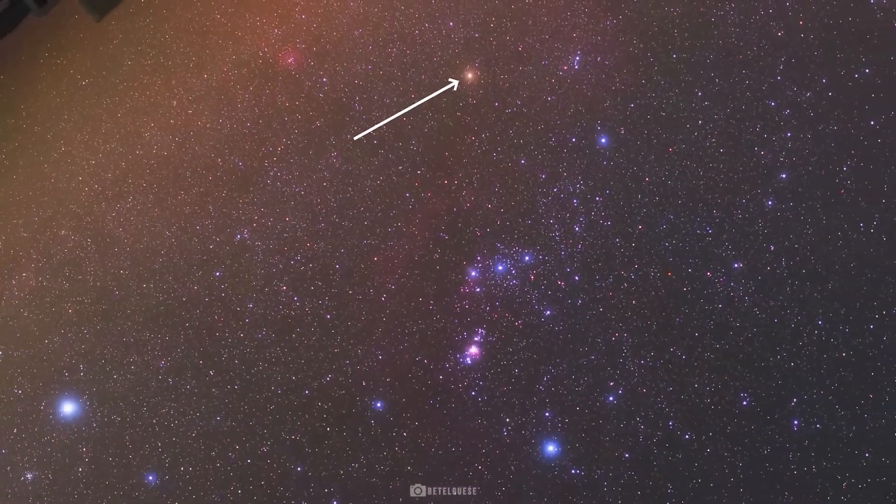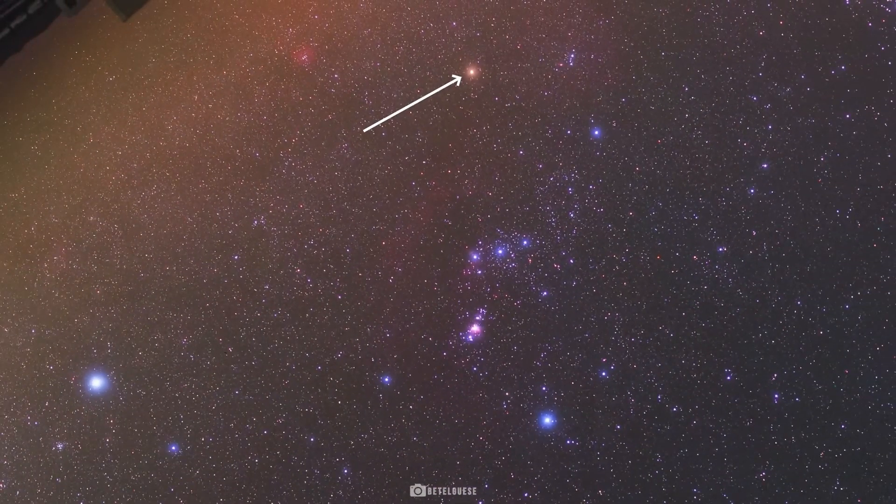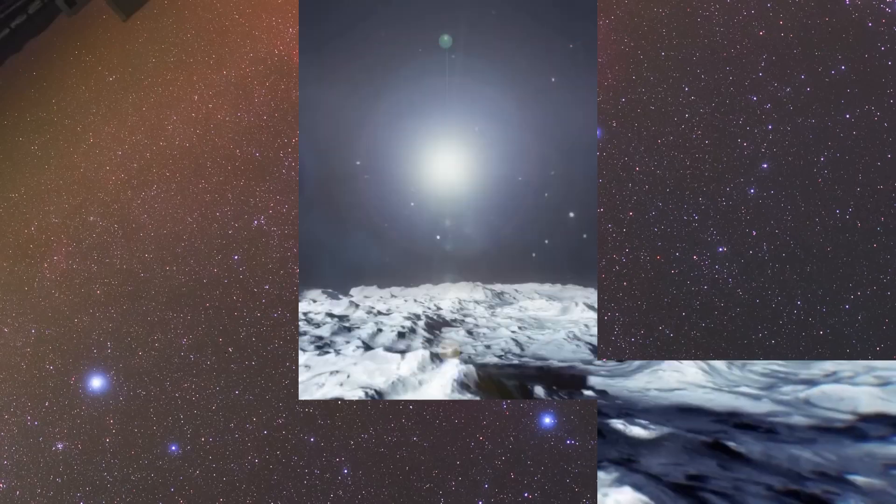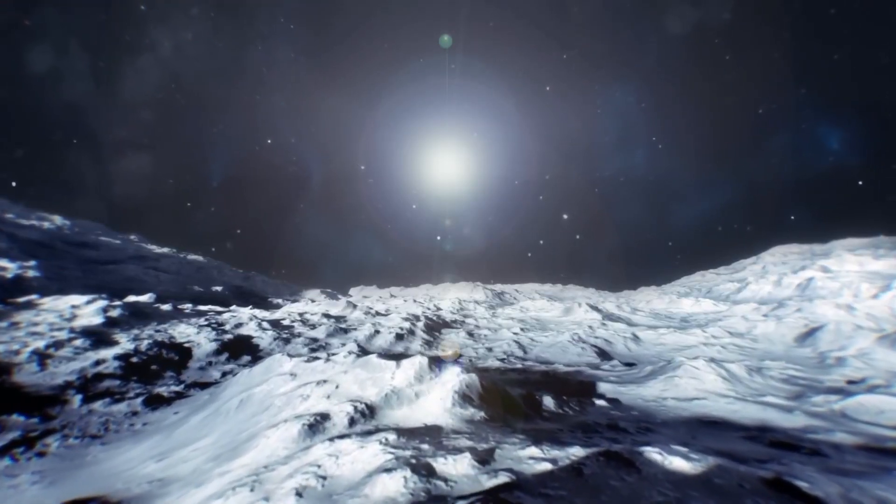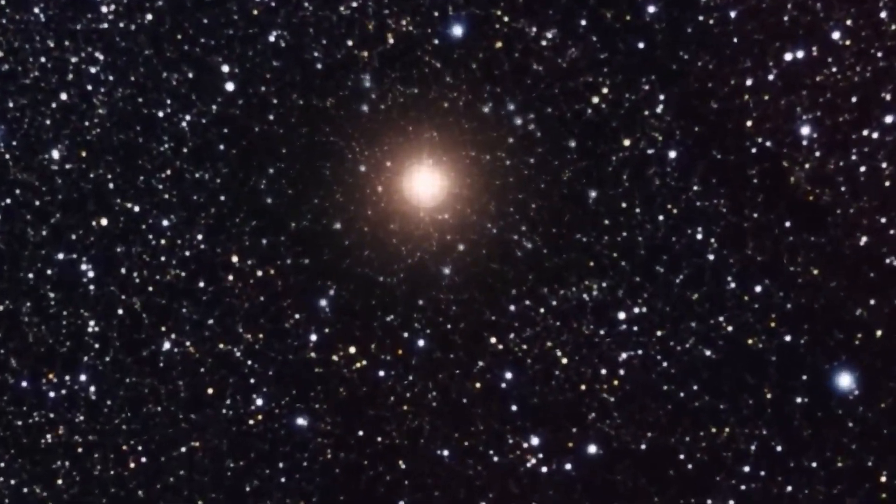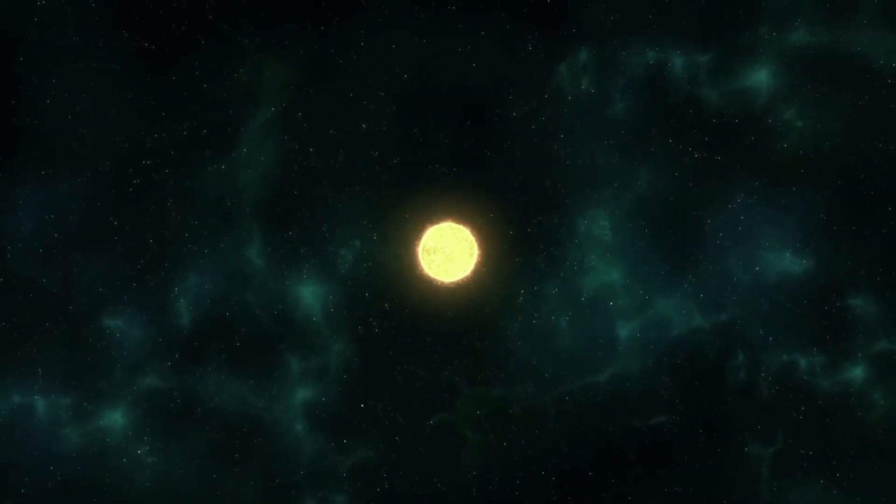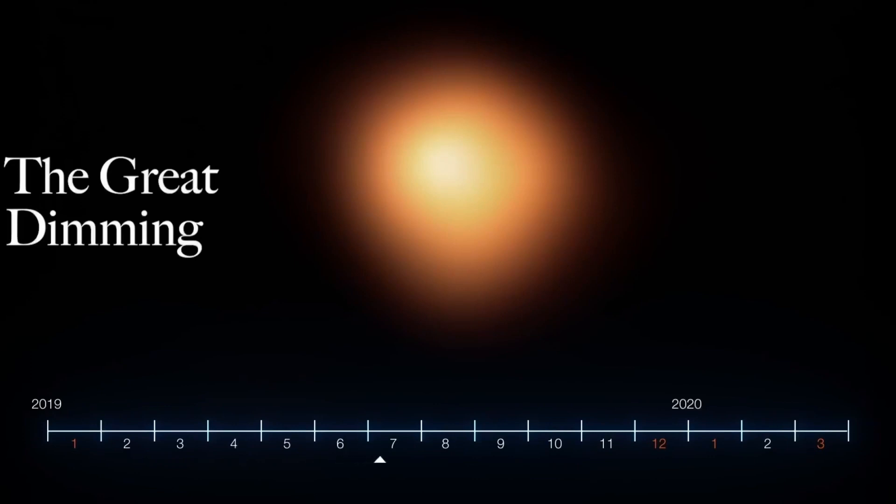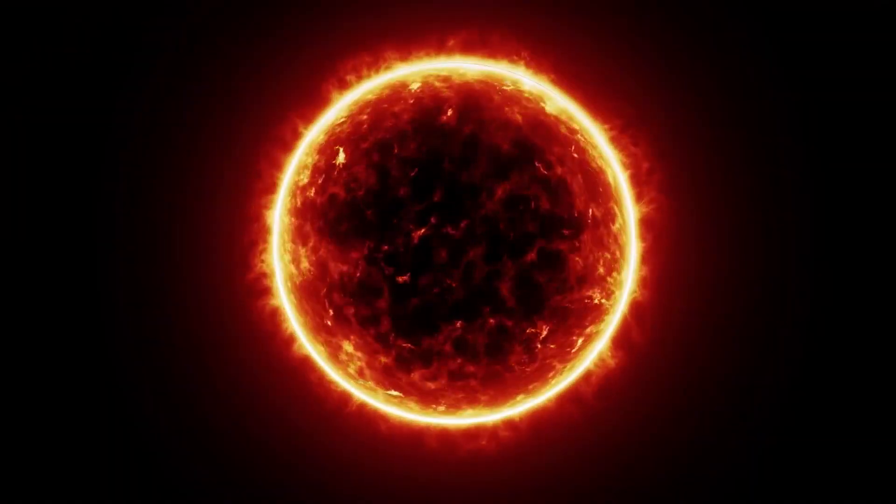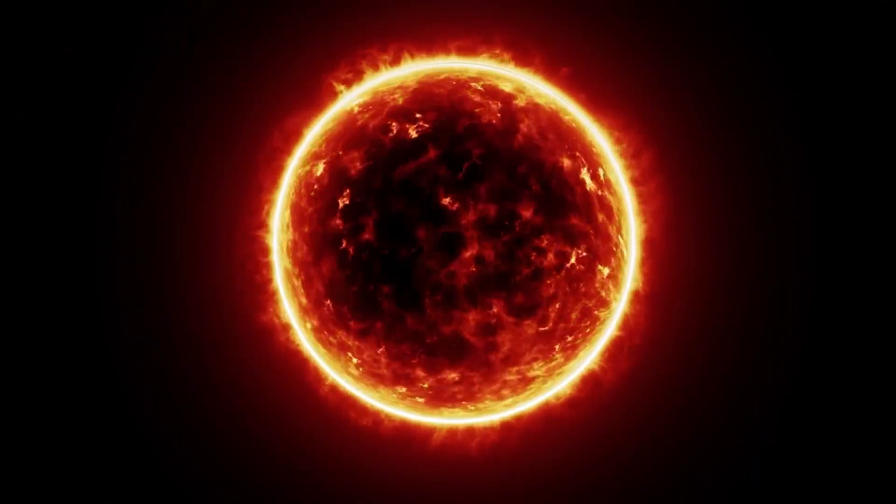Betelgeuse, the bright red star in the Orion constellation, has been acting a bit strange lately. In late 2019 and 2020, it went moody and dimmed down more than ever before. It even got fainter than Bellatrix, Orion's third brightest star. This cosmic dimming extravaganza earned the catchy name The Great Dimming. But fear not, Betelgeuse regained its stellar glow and bounced back to brightness.